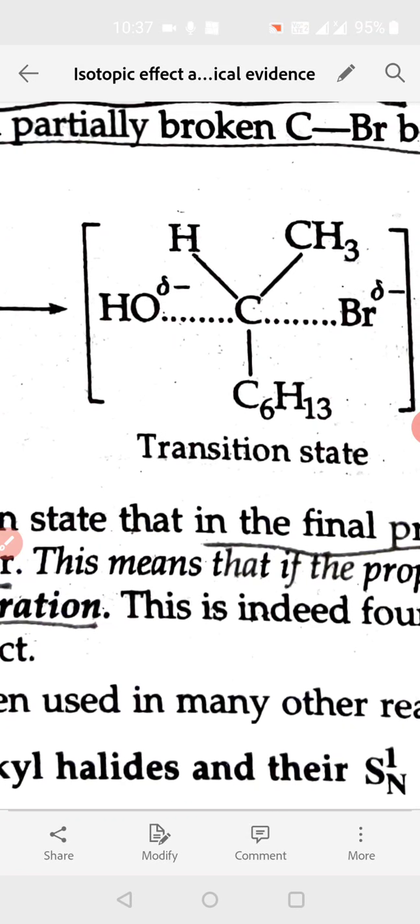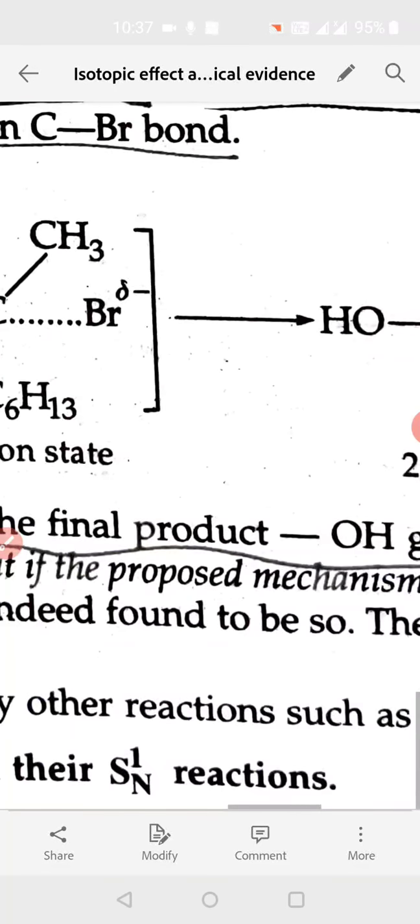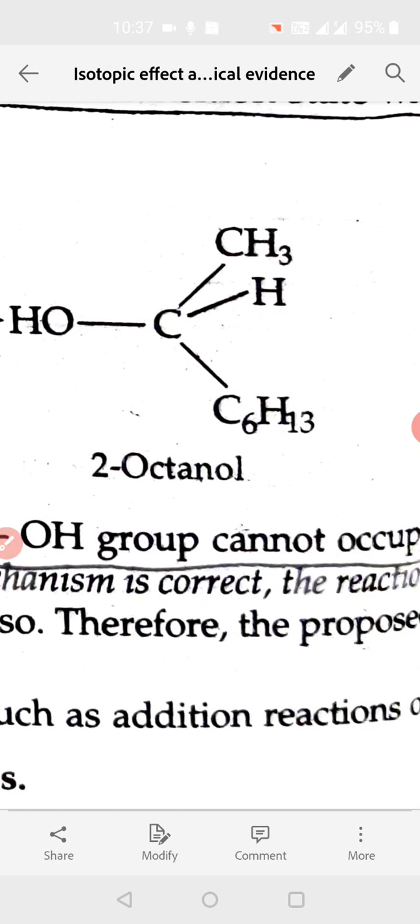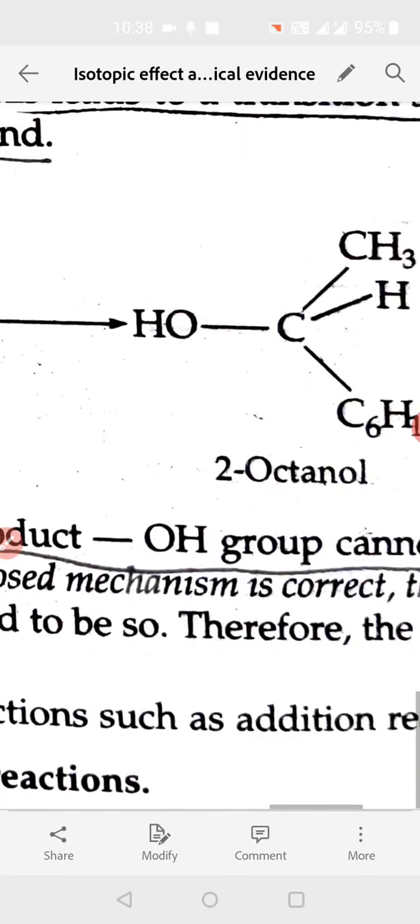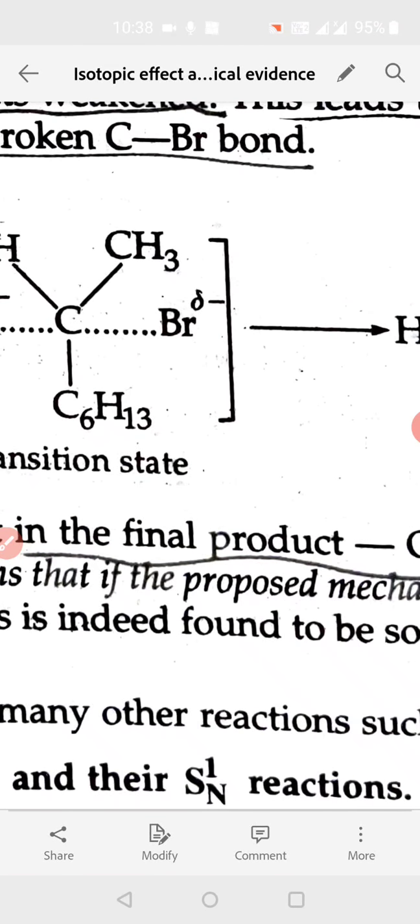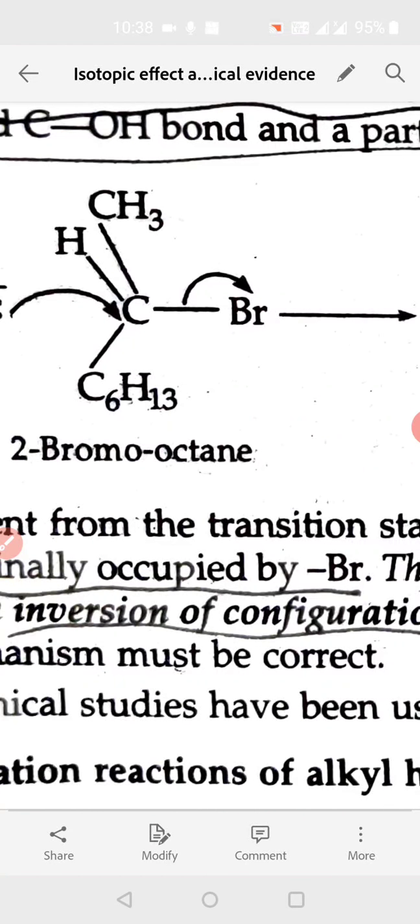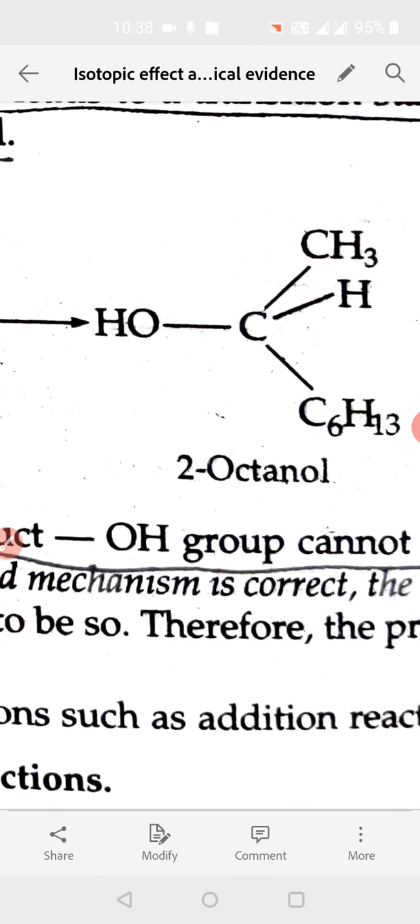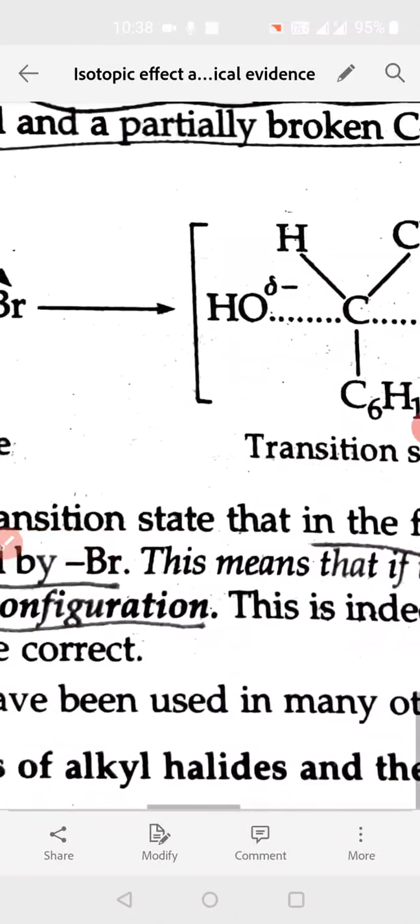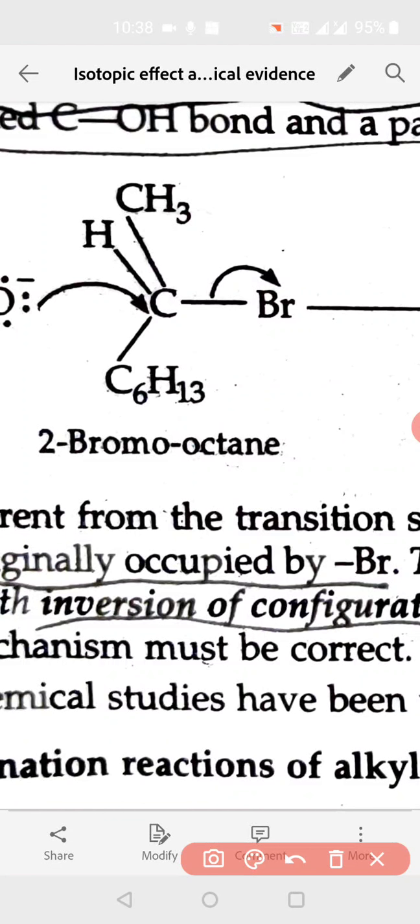So this structure suggests that it is a concerted mechanism. It is not that first Br left and then OH attached. The mechanism given on this basis is that there is not complete breakage of Br negative. This kind of system occurs where Br is leaving and OH negative is coming simultaneously. This kind of pentavalent transition state forms. When Br finally separates, the molecule adjusts to tetrahedral geometry with four bonds at 109.5 degree angles. But the geometry has been changed. It's like an umbrella. When OH comes from above and attaches, the umbrella inverts. Finally, OH attaches from above while Br leaves from below. So the umbrella inverts. This is known as inversion of configuration.